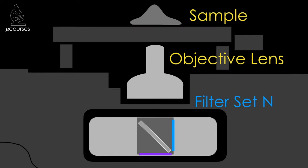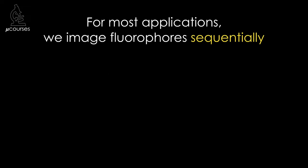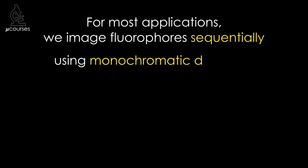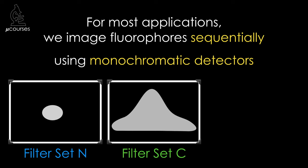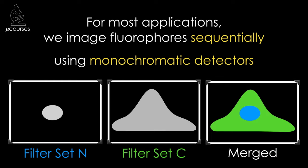Imaging multiple fluorophores in the same sample is most commonly performed sequentially by switching between filter sets in the microscope. For the vast majority of fluorescence applications, we acquire images sequentially and use monochromatic detectors because they're the most sensitive. In our example, we would acquire a monochromatic image with filter set N, then switch to filter set C and acquire a second monochromatic image. If we'd like, we can then digitally pseudocolor and merge these two images into one to aid in visualization of relative localization.